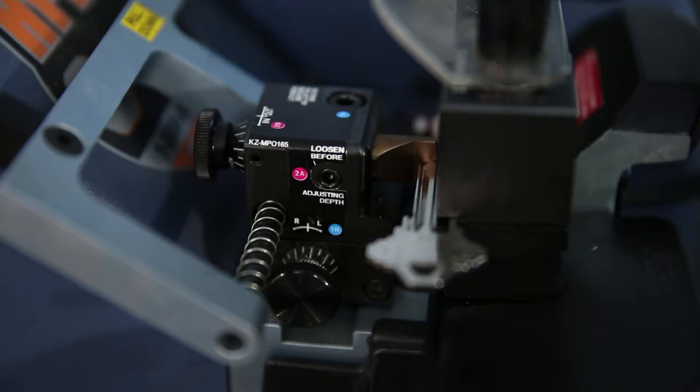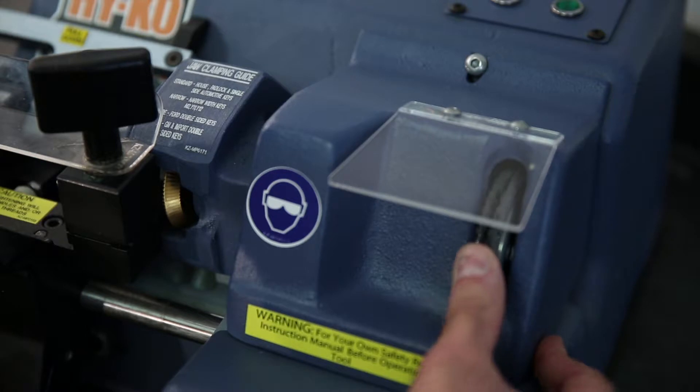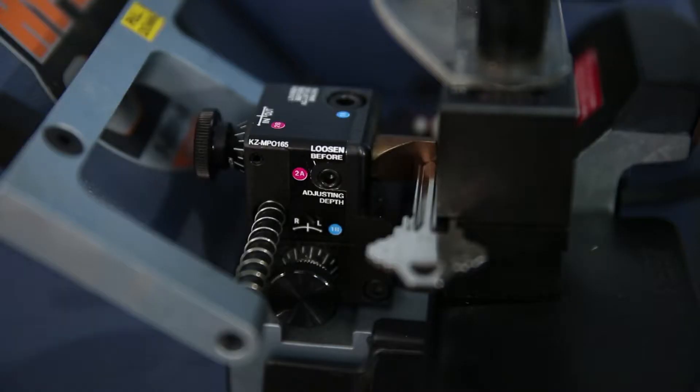Keep light pressure on the carriage handle so the carriage does not move back to the left. Now use your right hand to rotate the cutter in the upwards direction by spinning the brush. Spin for a couple revolutions. During the rotation of the cutter, the cutter should just graze the tip of the SC1 key blank in the right jaw. If that is the condition you find, the machine needs no adjustment at this time.